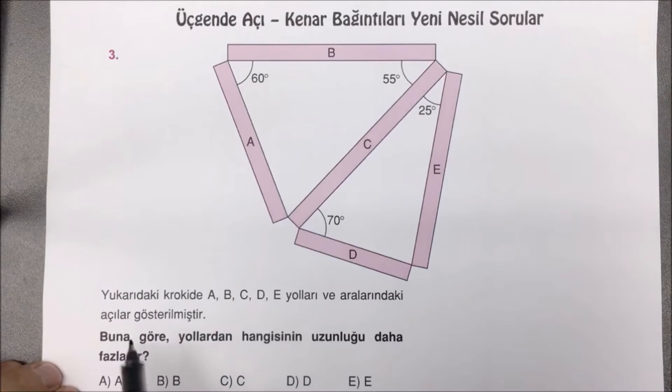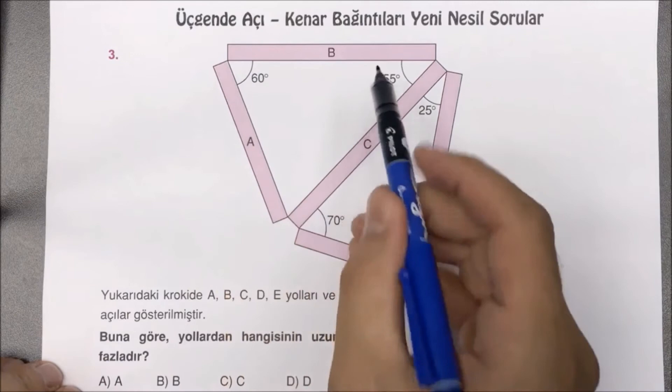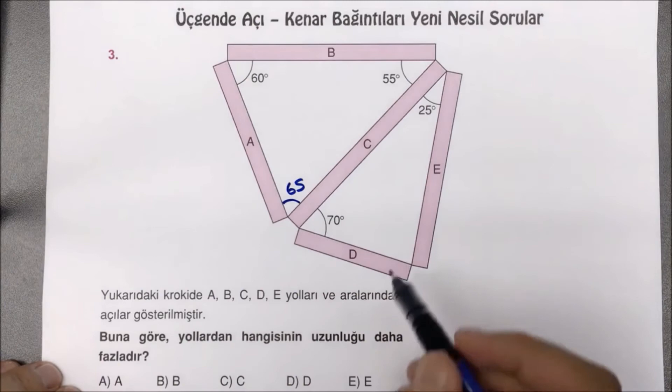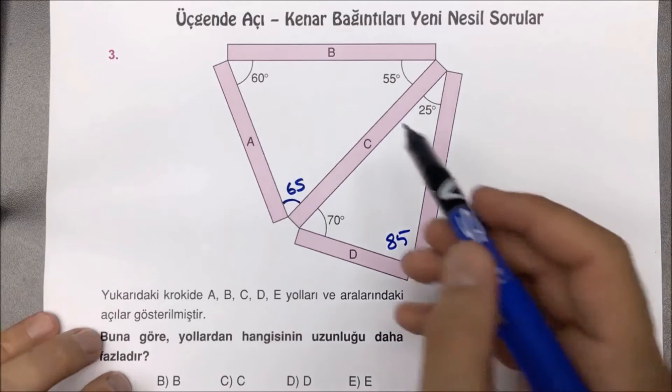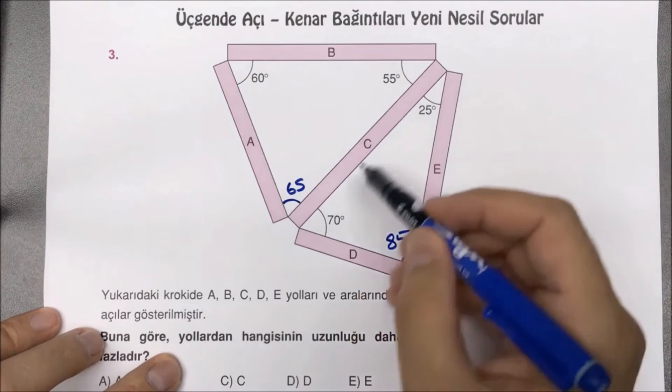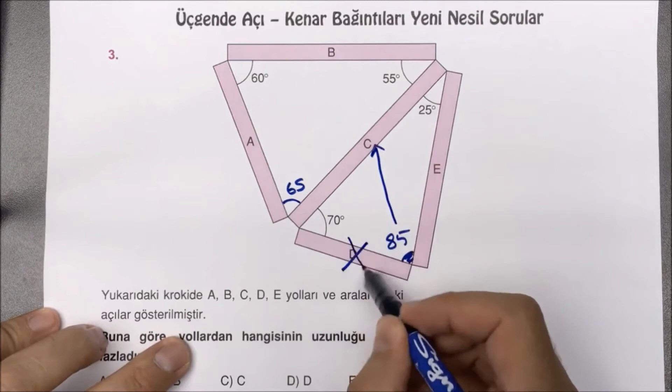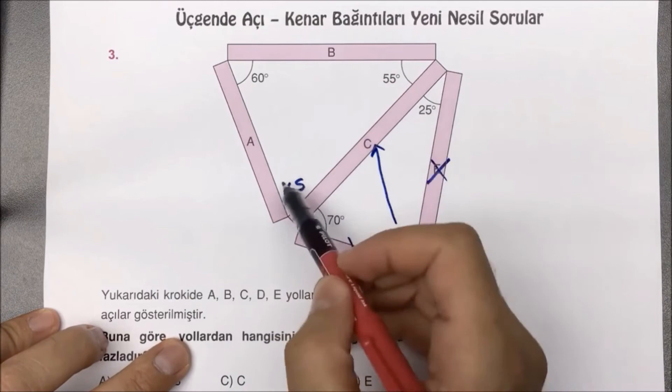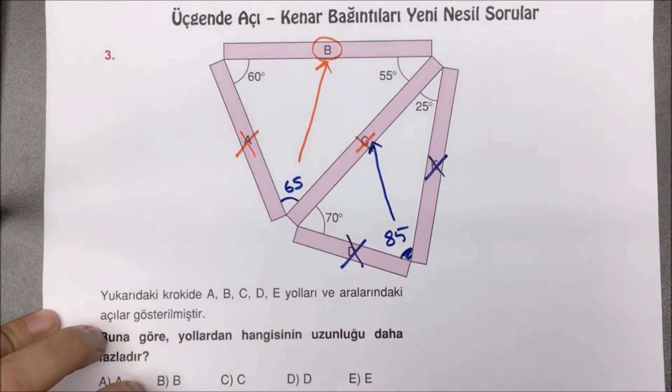Üçüncü soruya: yukarıdaki kroki verilmiş, hangi yolun daha uzun olduğunu sormuş. Açıları yazıyoruz: 60 var, 55 var, bu açıya 65 derece kalır. 70 var, 25 var toplarsak 95, bu açıya 85 kalır. Sağdaki üçgende en büyük açımız 85 derece olduğu için ok C'yi gösteriyor; D ve E olamaz. Üst taraftaki üçgende en büyük açımız 65 derece, B'yi gösteriyor; A ile C olamaz. Geriye zaten bir tek B kaldı. Doğru yanıt B seçeneğidir.